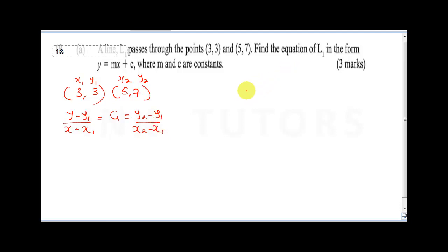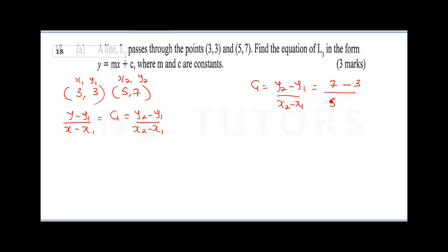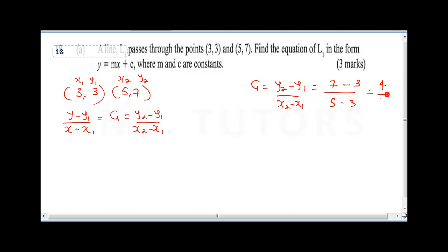Now let's find the gradient. The gradient is (y2 - y1) / (x2 - x1), so we have (7 - 3) / (5 - 3) = 4 / 2 = 2. So g1 = 2, and since the question asks for L1, we call this g1.